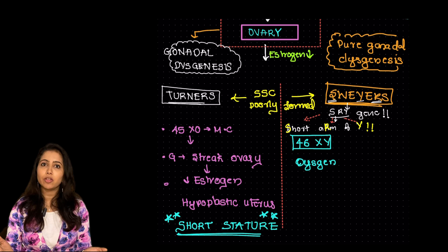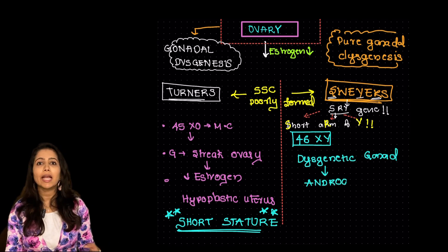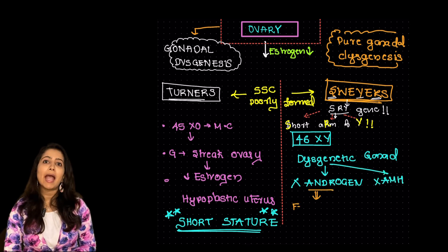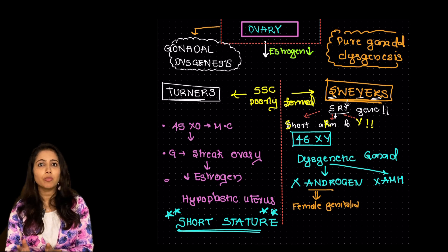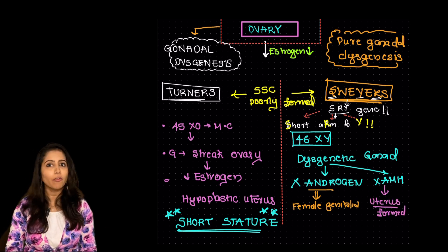And these dysgenetic gonads won't produce the androgen and AMH. As there is no androgen the external genitalia is that of a female. As there is no AMH the mullerian structures are not inhibited and there is formation of uterus.